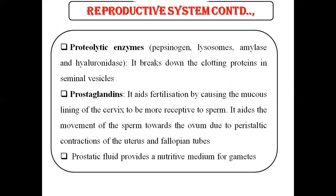Semen also contains proteolytic enzymes such as pepsinogen, lysozyme, amylase, and hyaluronidase. Hyaluronidase breaks down the clotting proteins in the seminal vesicle. The prostaglandin helps fertilization by causing the mucus lining of the cervix to be more receptive to sperm, and it helps the movement of sperm towards the ovum due to peristaltic contraction of the uterus and fallopian tubes.